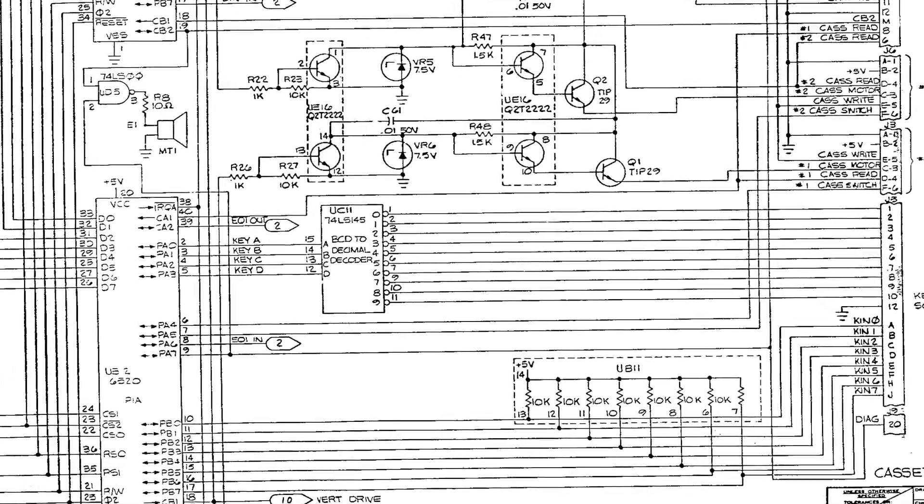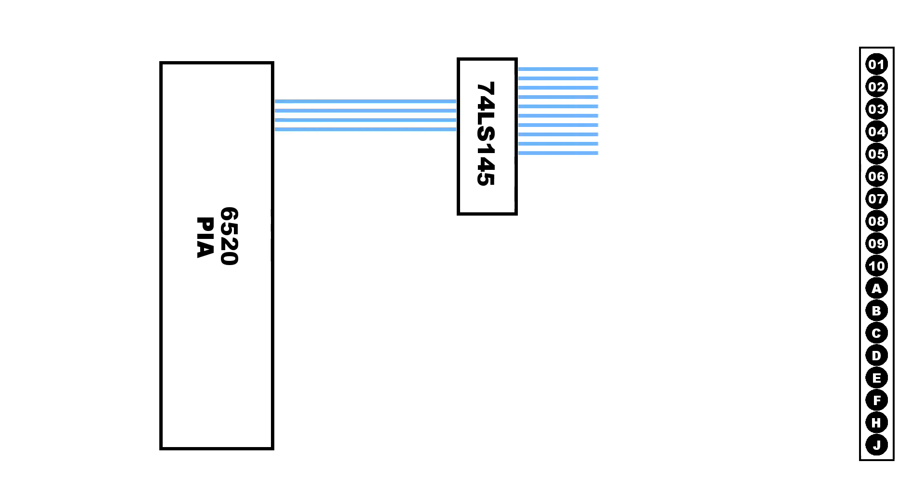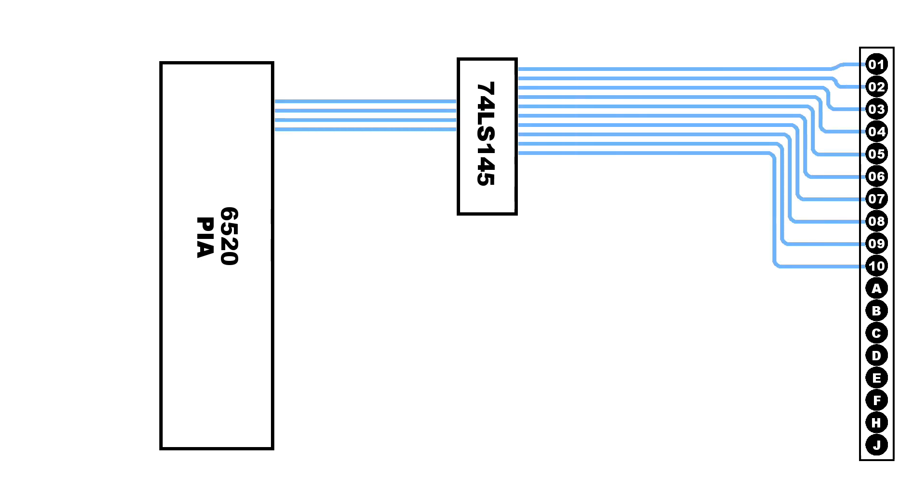Now at the logic board level, there are two chips that are mostly involved in running this operation. One is the 6520 PIA chip, and the other is a binary to decimal decoder chip. The decoder drives the output lines. The purpose of the decoder is that the computer can use only 4 output lines and send a binary signal, and the decoder chip will translate that into a single pin, like this.